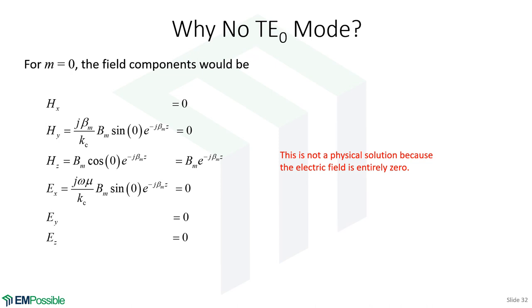Setting M = 0 in the TE field expressions gives zero electric fields everywhere, confirming there is no TE0 mode. A nonzero magnetic field without an electric field is not a physical propagating mode. Therefore TE1 is the lowest-order TE mode.